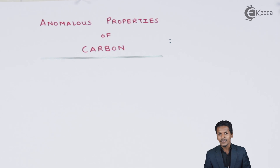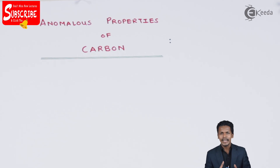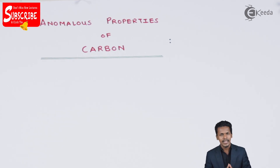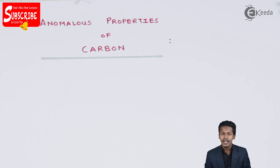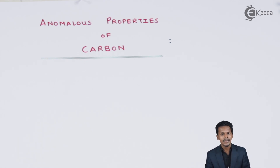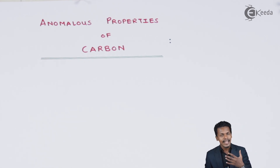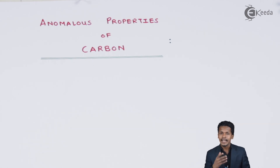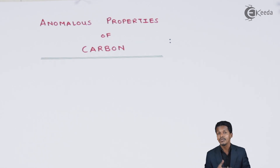In this topic we are going to talk about the anomalous properties or anomalous behavior of carbon in the group 14 elements. The different properties of carbon are mainly because of its atomic size. Carbon is the smallest atom with the smallest atomic size in the whole group 14, and that is the reason it has higher electronegativity. Because of its higher electronegativity and smaller atomic size, the ionization enthalpy of carbon is also more.